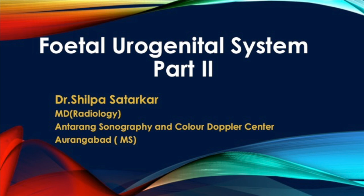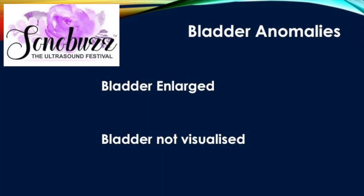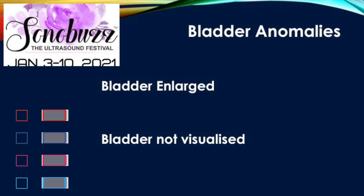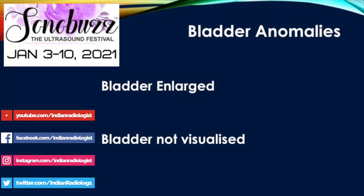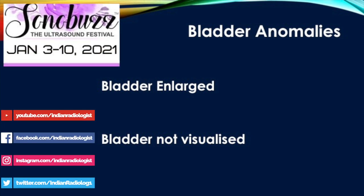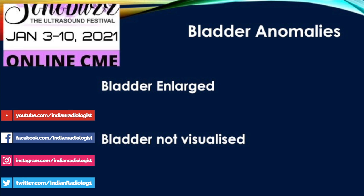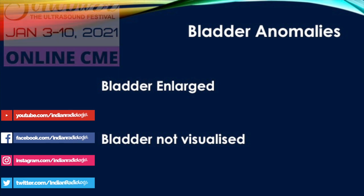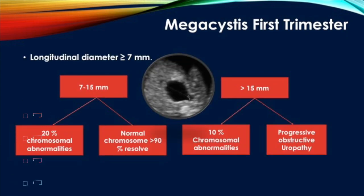We also discussed the abnormalities of renal number and position, as well as hyperechoic kidneys and their etiologies. In part two, we will discuss the anomalies of the bladder, ambiguous genitalia, the adrenal glands, and ovarian pathologies.